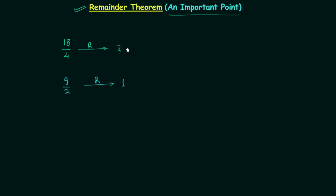So you can see the remainder in the first case is 2 but in the second case it is equal to 1 — so the remainders are different. The remainders changed because we simplified 18 divided by 4 to 9 divided by 2. We performed this simplification by dividing both the numerator and denominator by 2, and because of this the remainder 2 was also divided by 2, giving us 1.